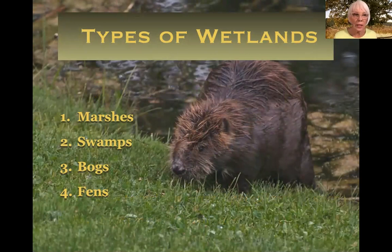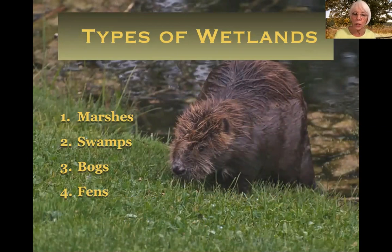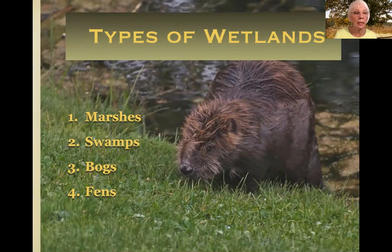Wetlands are divided into four separate categories. We have marshes, which concentrate on wetland grasses. We have swamps that focus more on woody plants. Then we have bogs that are very, very unique. And lastly, fens.